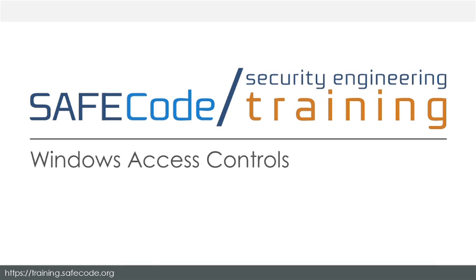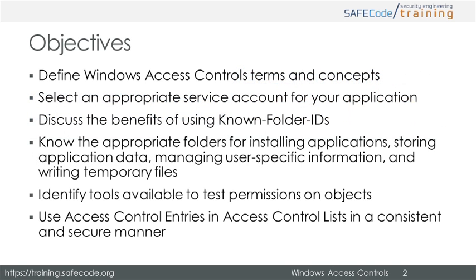Welcome to the SafeCode eLearning course on Windows Access Controls. After completing this training, you'll be able to define common Windows access control terms and concepts, select an appropriate service account for your application, discuss the benefits of using known folder IDs over hard-coded folder locations, know the appropriate folders for installing applications, storing application data, managing user-specific information, writing temporary files, identify tools available to test permissions on objects, and use access control entries in access control lists in a consistent and secure manner.